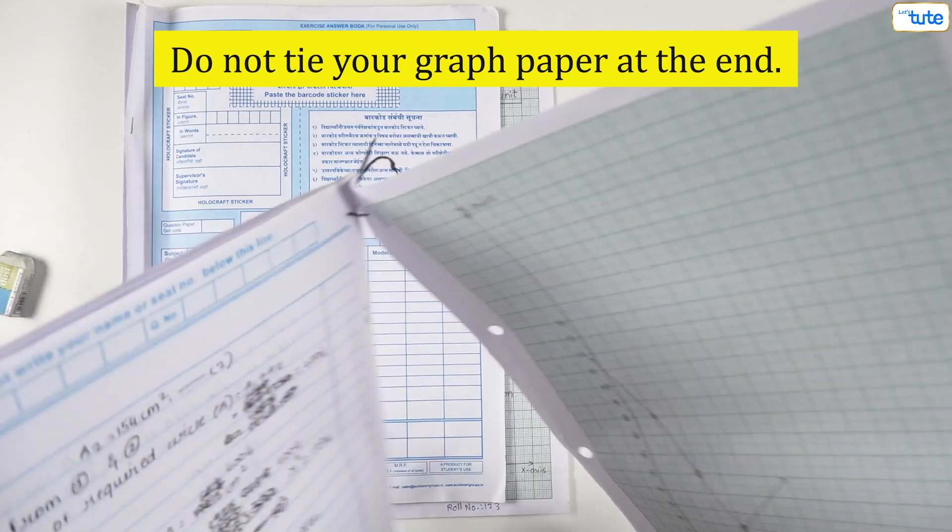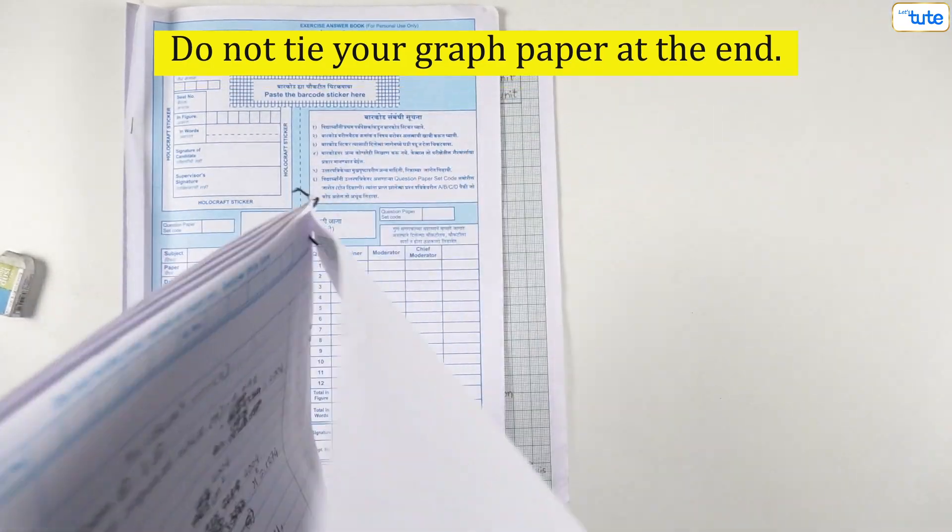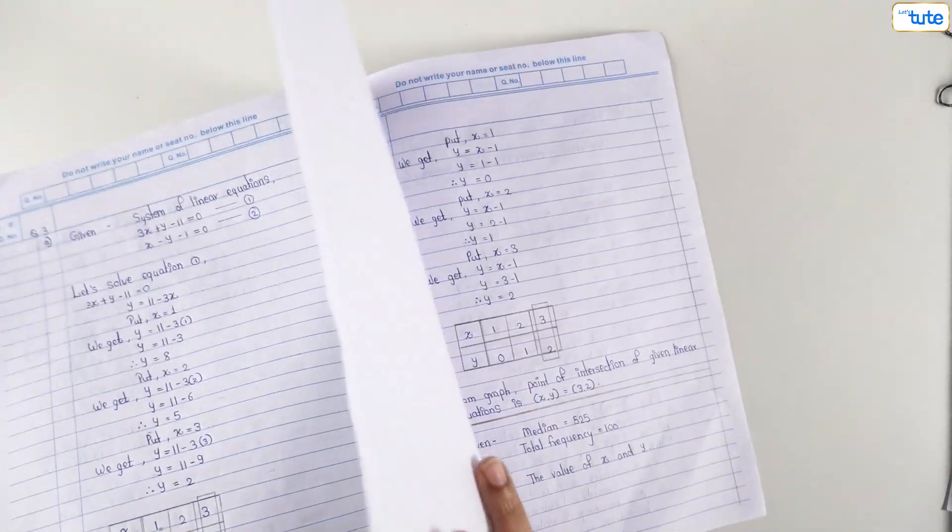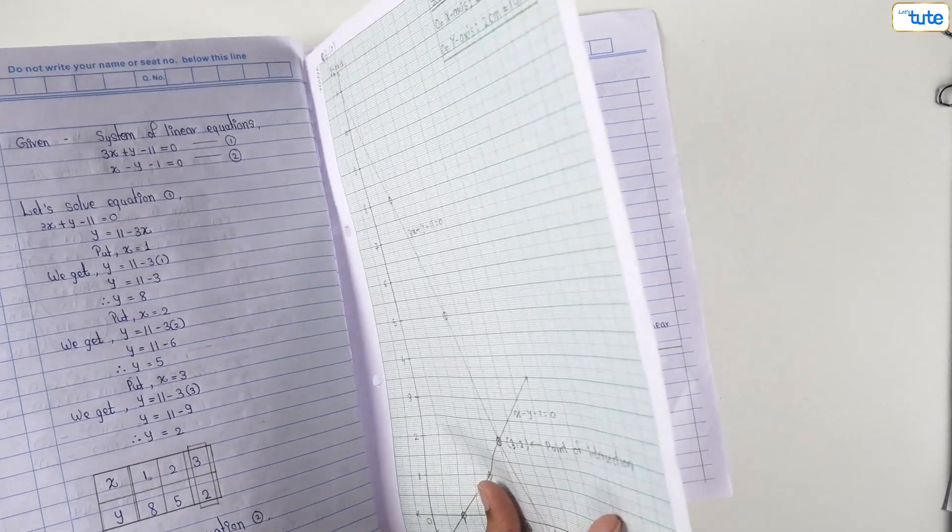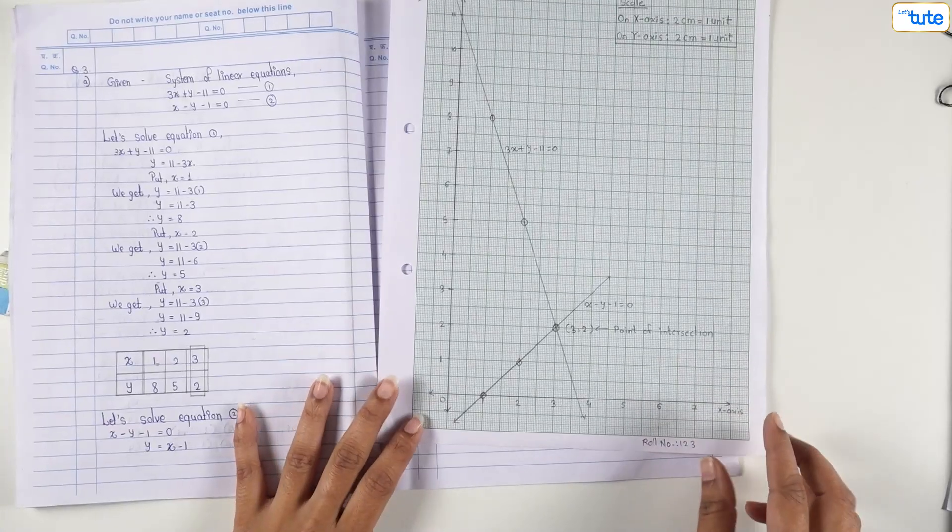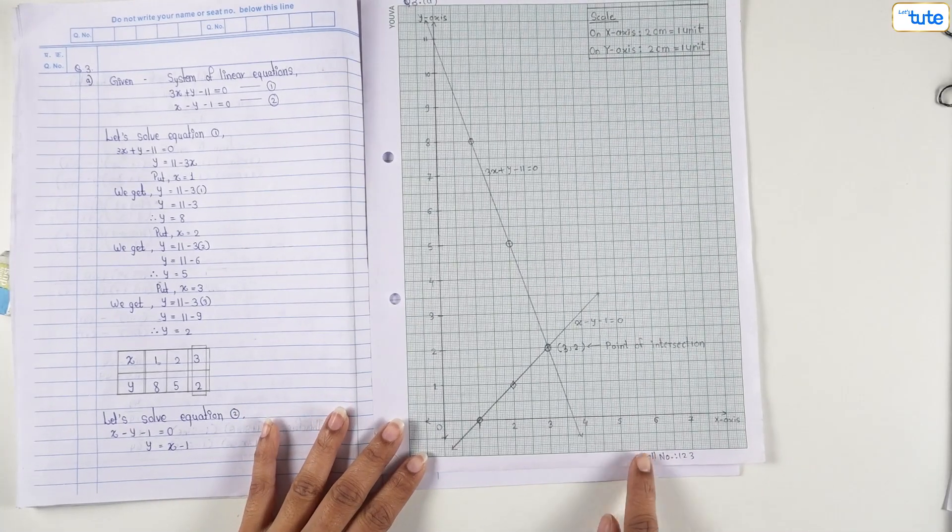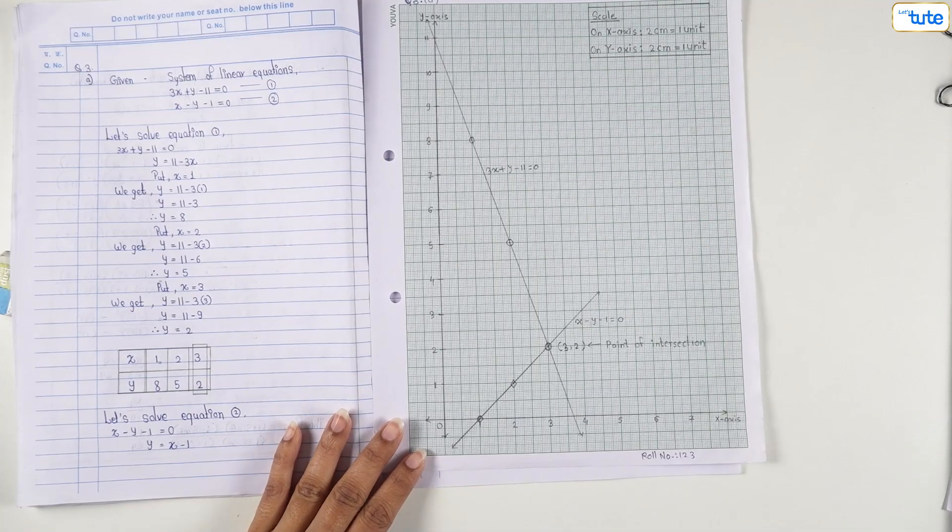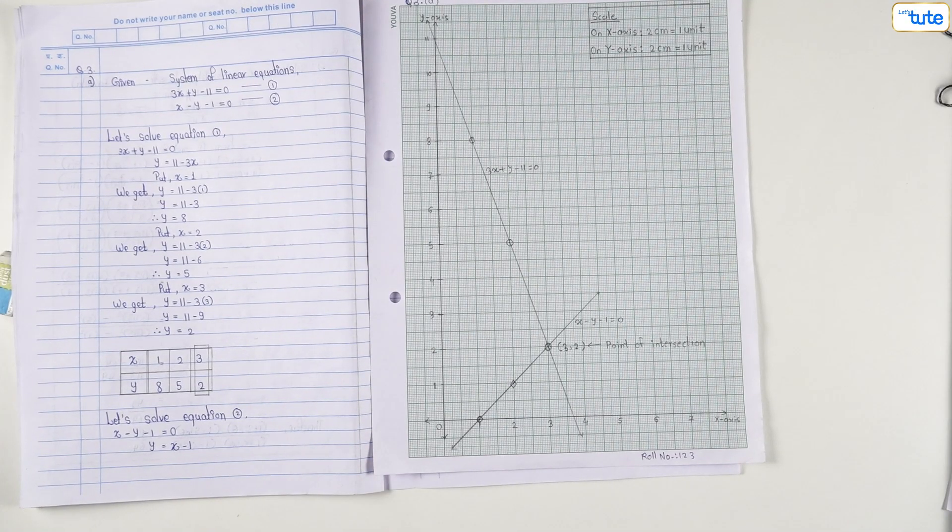Do not tie your graph paper at the end. Instead, put it in the middle of the answer sheet, which will avoid it from getting damaged, torn, or misplaced. Also, do not forget to write your name and roll number on the back side or bottom right corner of the graph sheet.